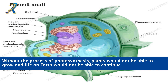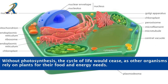Without the process of photosynthesis, plants would not be able to grow and life on earth would not be able to continue. Without photosynthesis, the cycle of life would cease, as other organisms rely on plants for their food and energy needs.